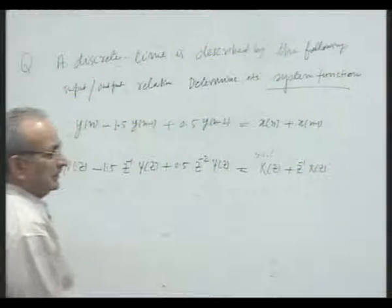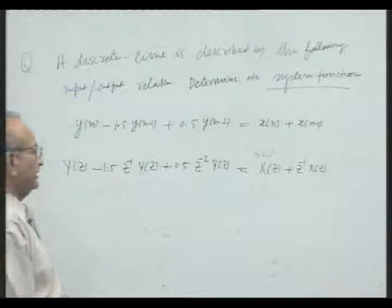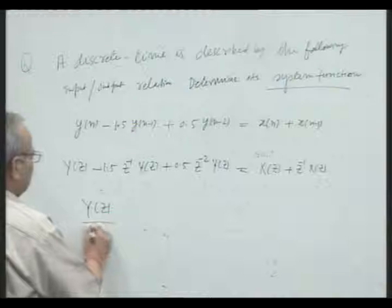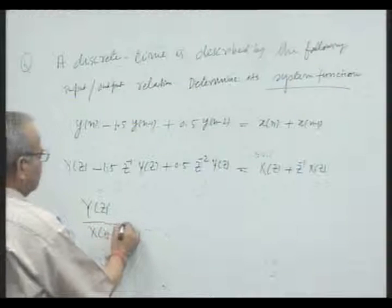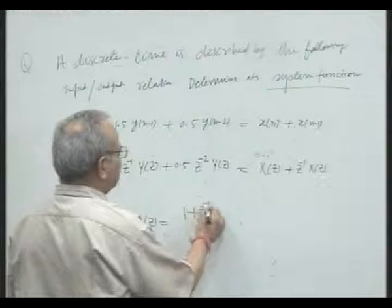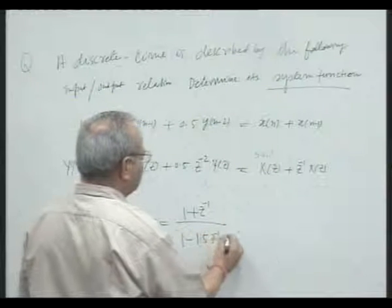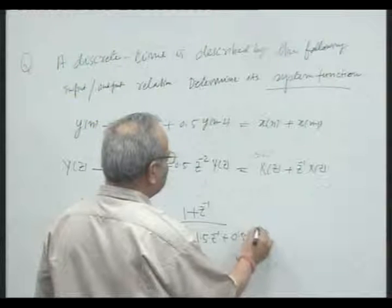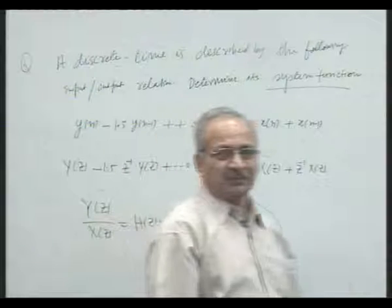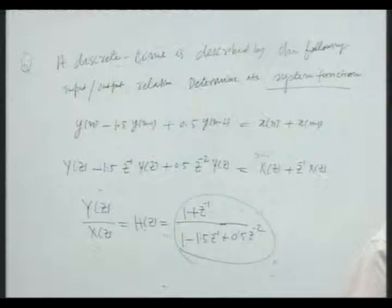The system function is defined as the ratio of the output transform to the input transform. So Y(z) divided by X(z) gives the system function, which is given by 1 plus z inverse, upon 1 minus 1.5 z inverse plus 0.5 z to the minus 2. This is the required system function. From the system function, we can get a lot of information.